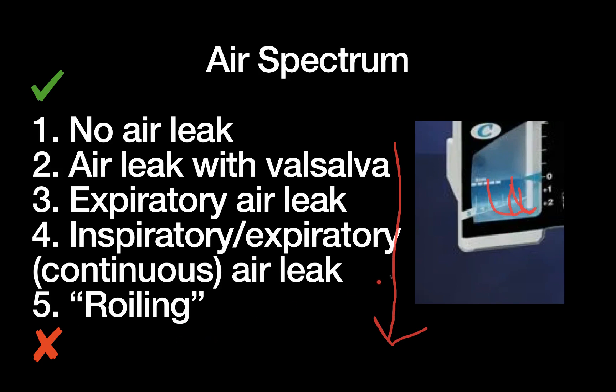If you see roiling, I would recommend trying to pinch off the chest tube at the patient's skin to see if that leak is coming from some sort of break in the circuit rather than from the patient's lungs. Because if it's coming from the lungs, that's probably a very proximal injury of a big bronchial structure, which is quite concerning.